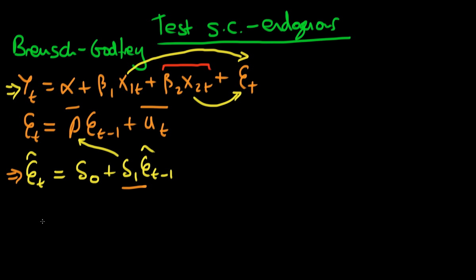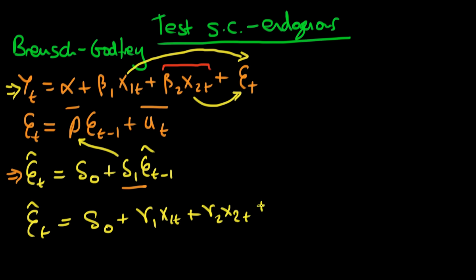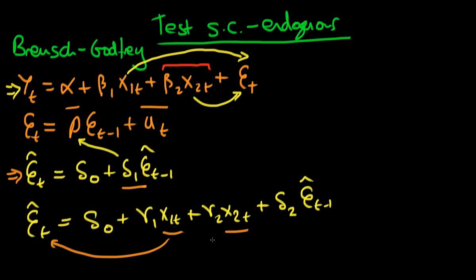The idea is that if we regress our residuals on a constant, our original regressors x1t and x2t, as well as the lagged residual et-1 hat, then by including these variables in the auxiliary regression we allow et to be determined by the independent variables. This is appropriate when we have endogenous regressors. By including those terms, any t-tests conducted on — say — delta2 in this regression are actually going to be valid, because we've corrected for the presence of serial correlation.